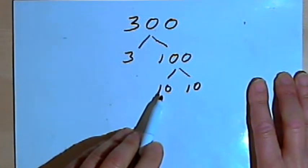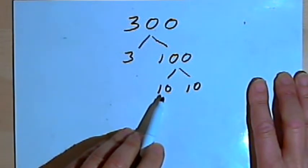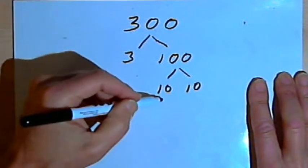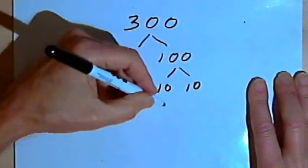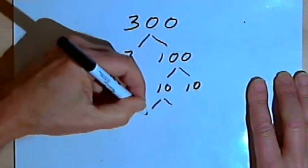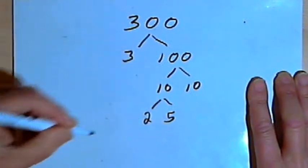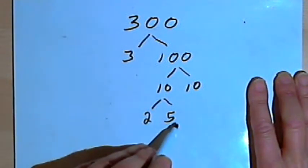Now 10 is not a prime number. It's a composite number. So I want to break 10 down into its prime factors. So 10 is 2 times 5, and 2 is a prime number and 5 is a prime number.